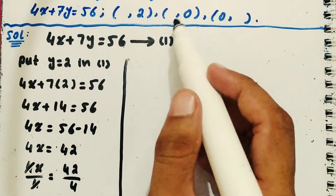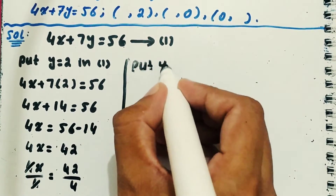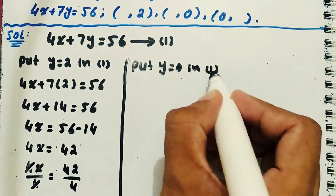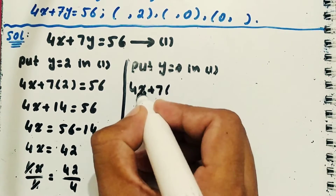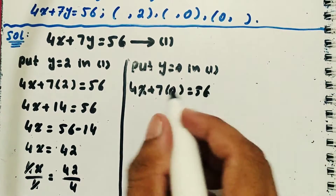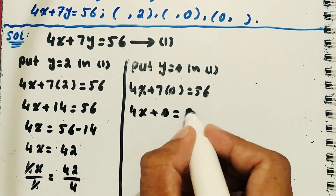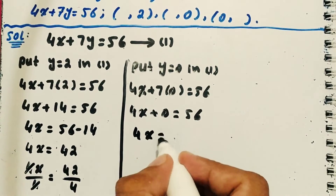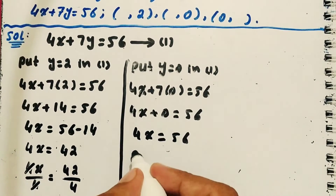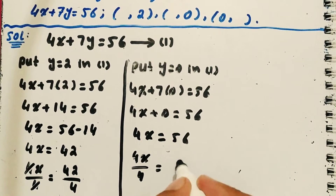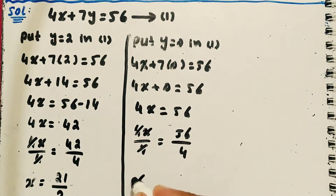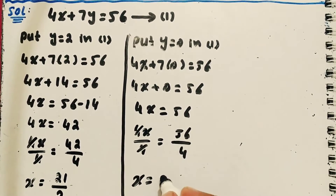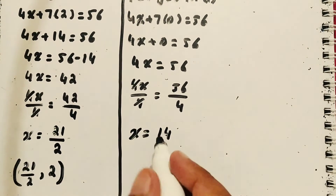Doosra ordered pair lete hain jisme y = 0 hai. Put y = 0 in equation no. 1. Equation mein y ki jagah 0 laata hoon: 4x + 7(0) = 56. So 4x = 56. Dono taraf 4 se divide karta hoon: 4x/4 = 56/4. Yeh dono cancel ho jayenge. So x = 14. 4 fours are 56. Hamare paas ordered pair complete ho gaya: x = 14, y = 0.